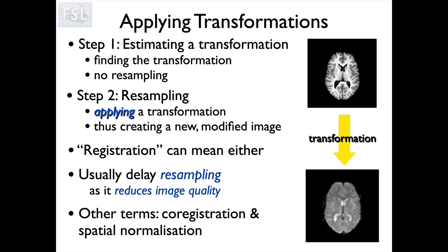Other terms worth knowing: co-registration is really just registration because it refers to registering two different things together - it's the same thing. Spatial normalization is more specific: it is registration to a normalized image or standard template. Whenever we register to standard space, that's doing spatial normalization - just another way of saying registration to standard space.